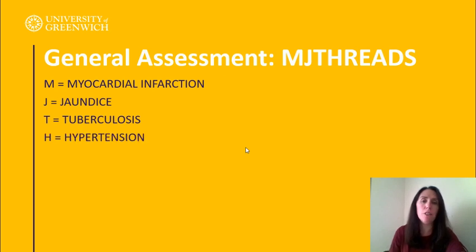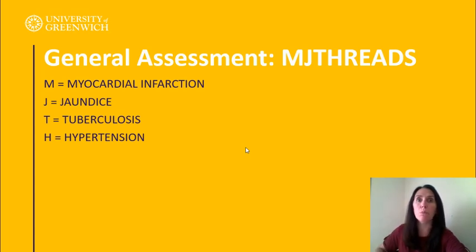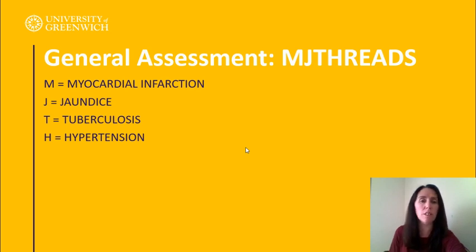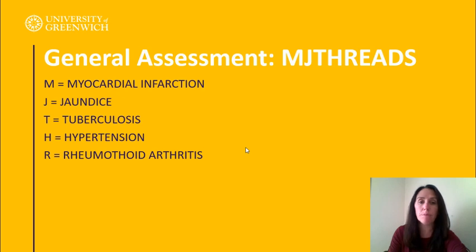R is rheumatoid arthritis — look up why this is important; sometimes rheumatic fever is included here too. E is epilepsy — find out whether a patient has epilepsy. Even if they haven't had a seizure, or even if they have seizures and it's not diagnosed as epilepsy, find out: have you ever had a seizure? What did they say it was? How long ago, how long did it last? There might be something affecting the neurological system.